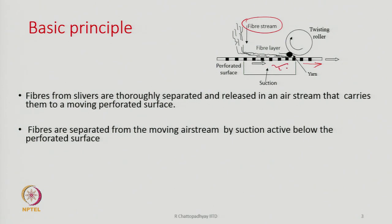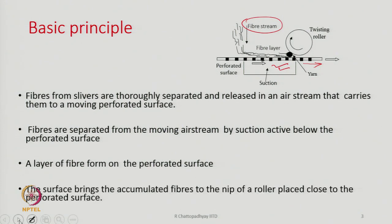Fibers are then separated from the moving stream by suction which is active below the perforated surface. There is suction acting in this region, so whereas the fibers are landing on the perforated surface, the air is sucked out and the fibers rest on the perforated surface which acts like a screen. There are many perforations and as the air is sucked out the fibers remain on the surface. A layer of fiber forms on the perforated surface, and the surface is not stationary but moving from left to right.